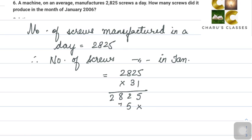So our answer is 87,575 screws. This is how much it will make in the month of January.